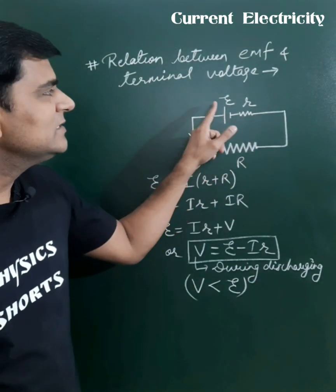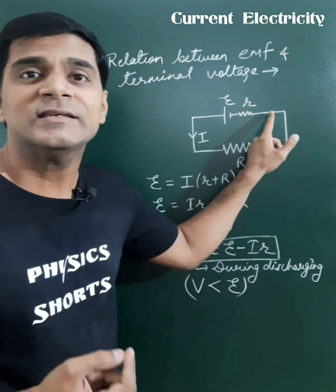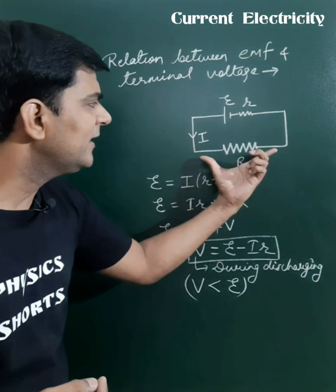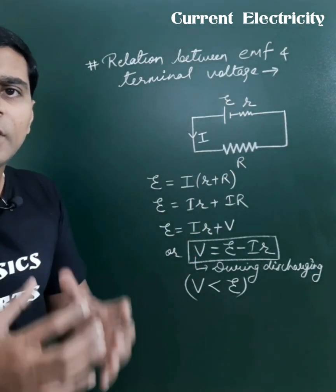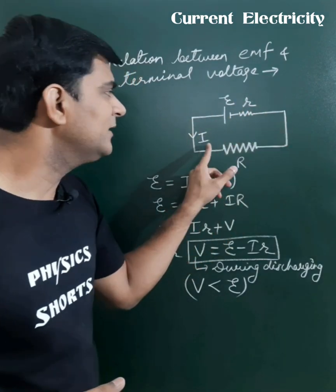Let us consider a cell which is having the EMF E and its internal resistance is r, and it is connected with an external resistance R, in which the current flowing in this circuit is I.